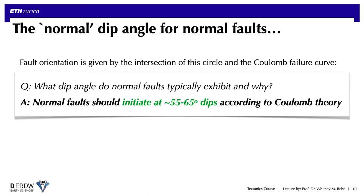What this means is that in the case of breaking intact rock to form new faults in an extensional regime, those faults should always be around 60 degrees and definitely not even close to the 10 to 20 degrees that we see in most core complexes.